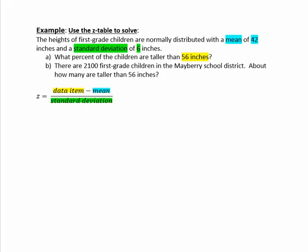So filling those numbers into the formula, we have 56 minus 42 divided by 6. Subtracting on the top, that gives us 14 divided by 6.